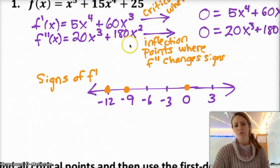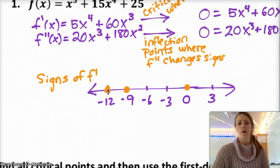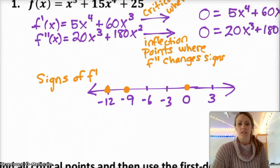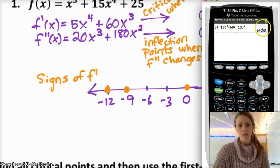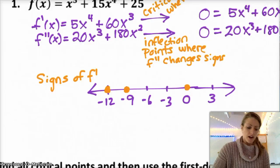f prime is 5x to the fourth plus 60x cubed, and I want to know on both sides of my critical values what the sign of f prime is. Negative 12 is my first critical value, so I want to know on the left of negative 12 what the sign of f prime is. I would pick a value to the left, like negative 13, and plug that into f prime to see what sign it gives. In this case, if I plug in negative 13, I get negative 13 to the fourth times 5 plus 60 times negative 13 to the third. The important thing is that this number is positive — that's all I care about, just the sign. So I would put a plus sign to the left of negative 12.